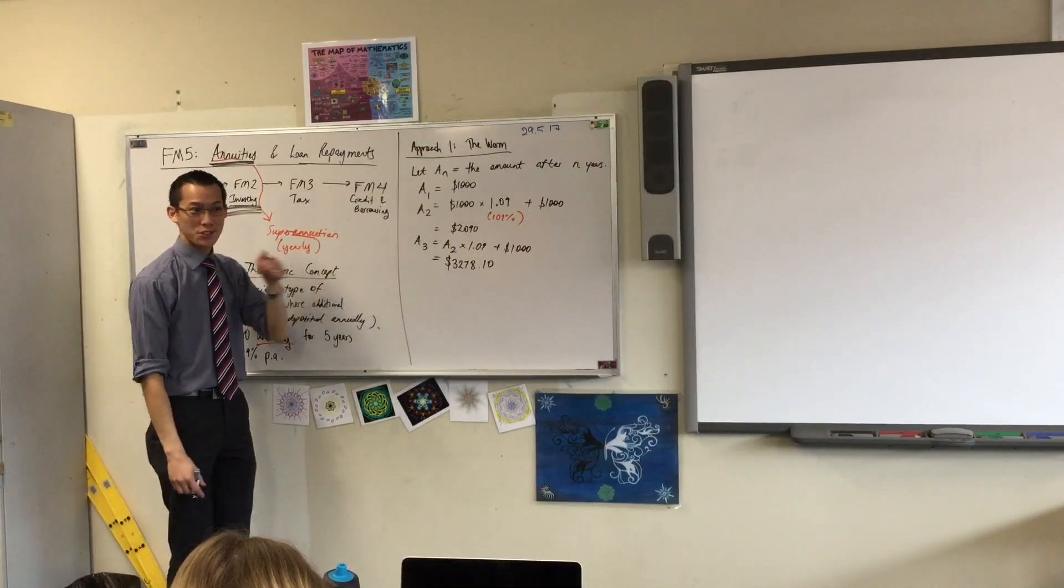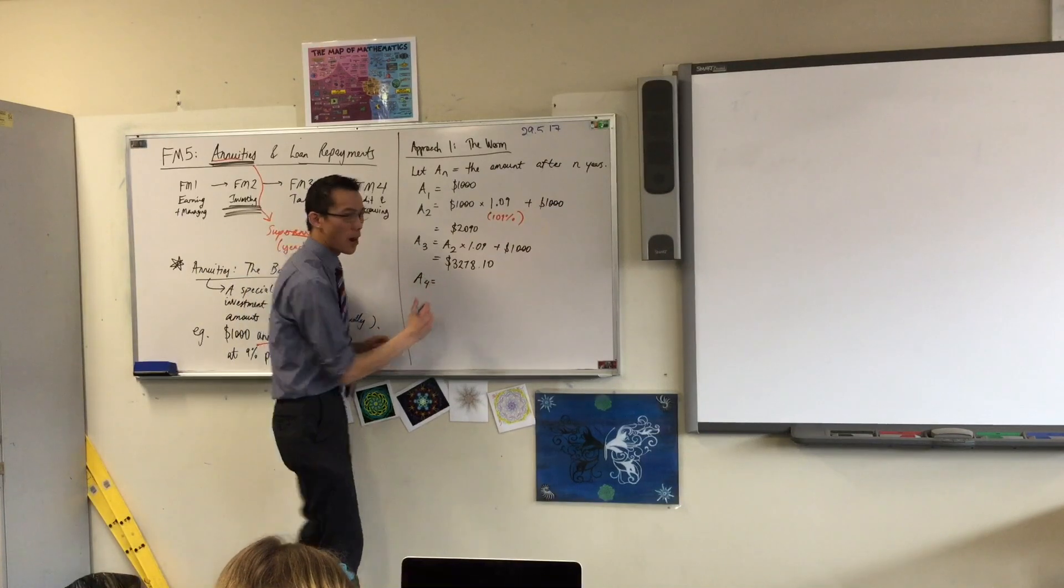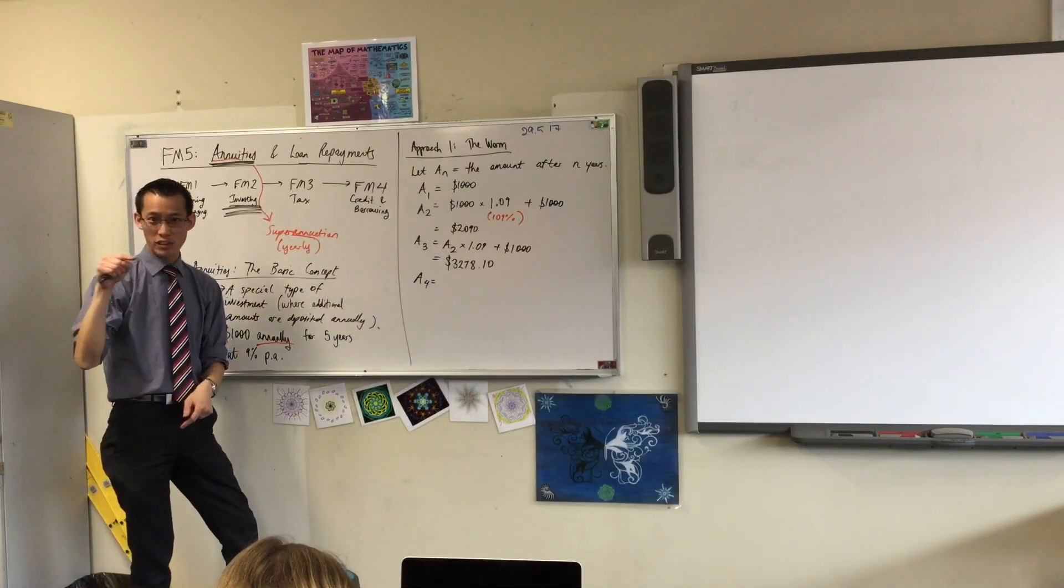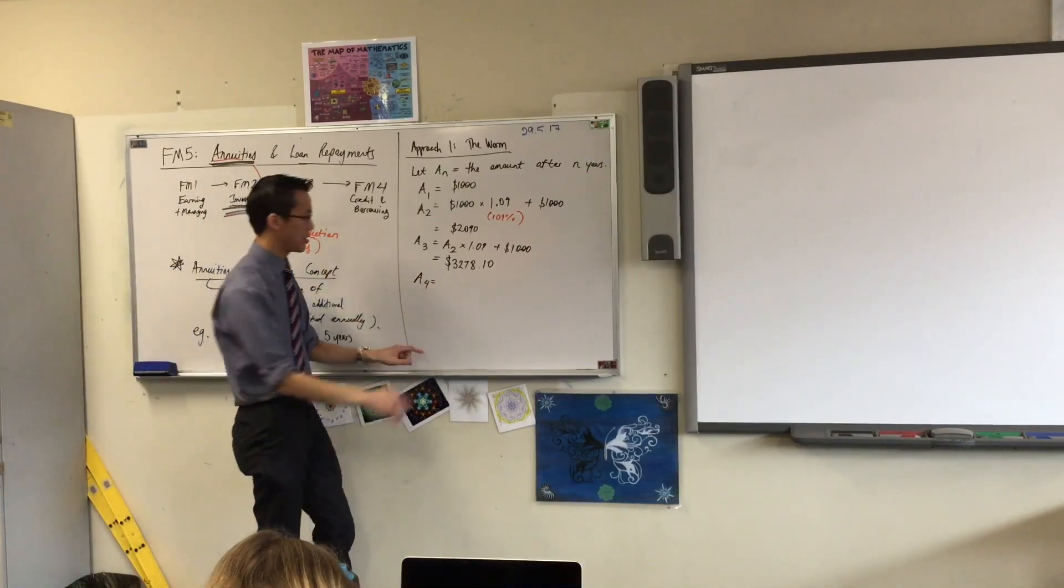Now, how many times am I going to have to do this? Five times, right? And now, hopefully, you can see why I am calling this the worm's approach, because all it can do is just slowly chew through this along the ground. I'm going to contrast this to another way in a minute. So let's finish this out. You can see it forms this pattern.